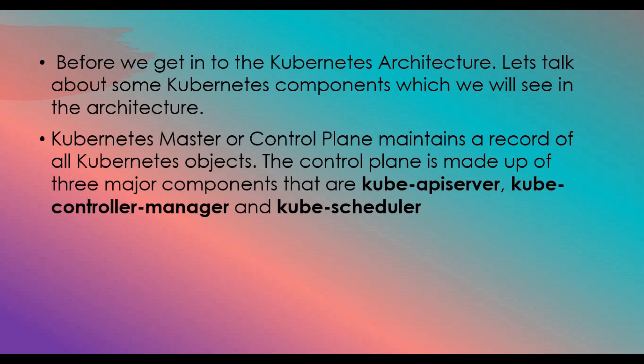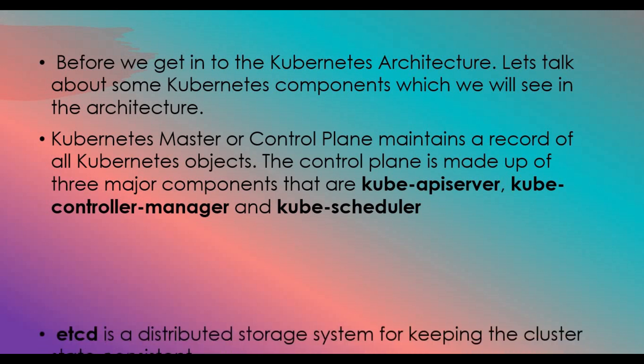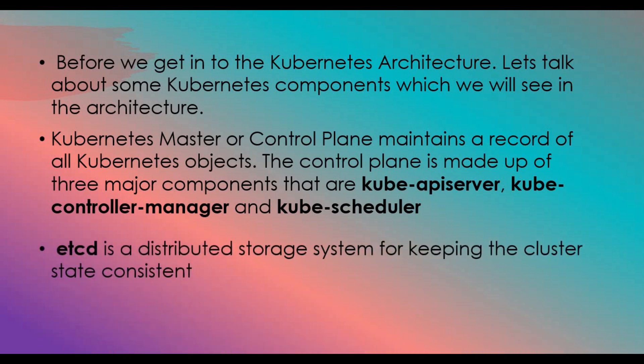There are three main components in the master: the kube API server, the controller manager, and the scheduler. We will also see something called etcd, which is a key store in the Kubernetes master. It is mainly used as a distributed storage system to keep the cluster state consistent and store the states of the cluster.